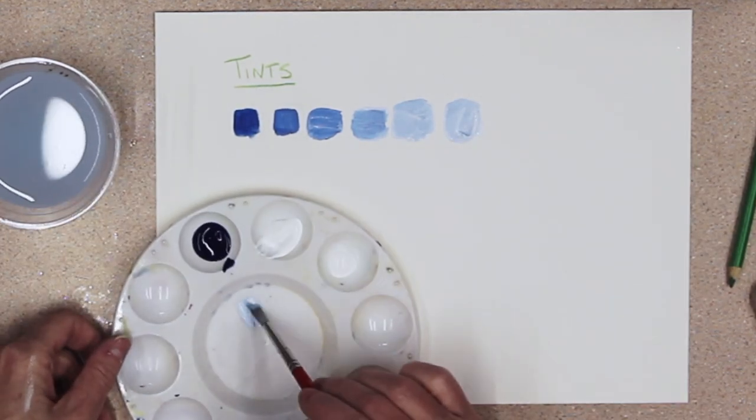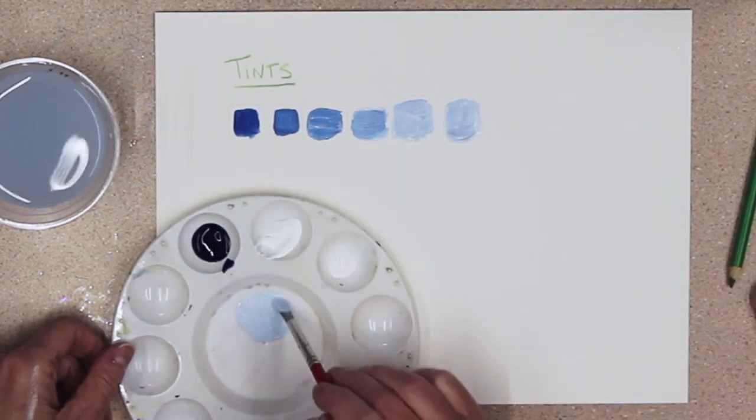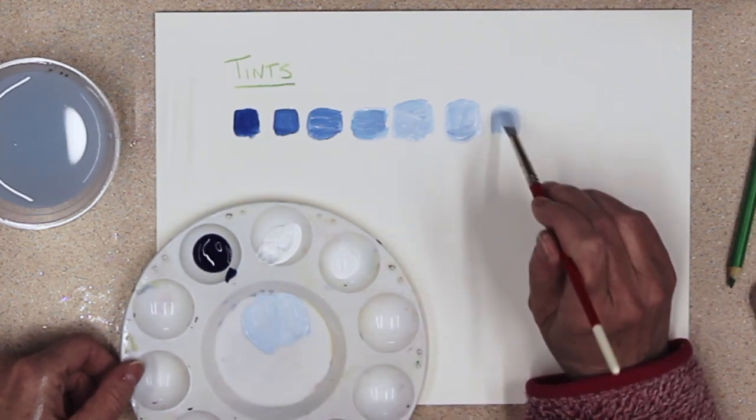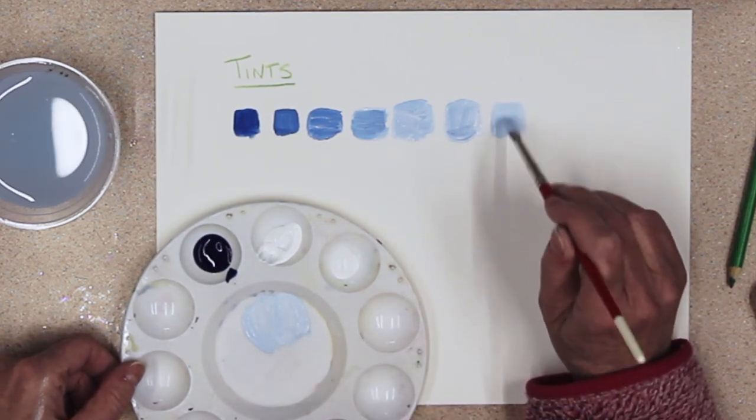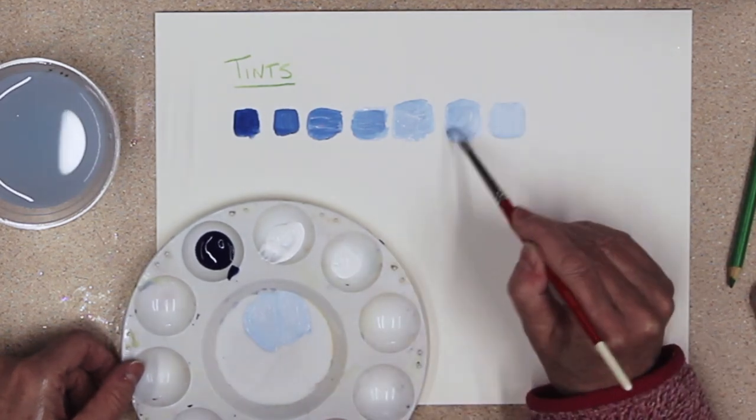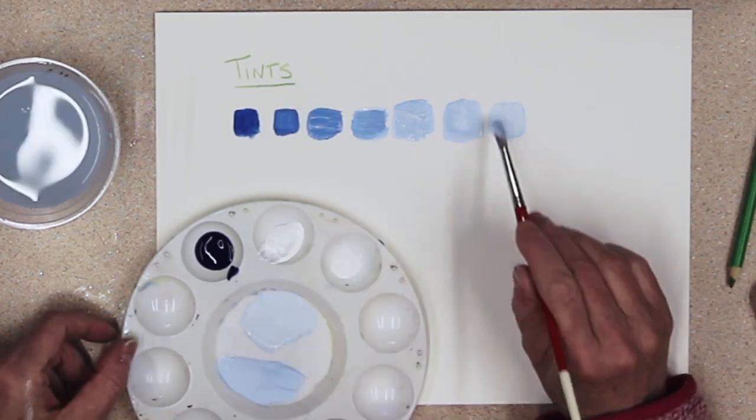So let's start using the palette instead, and that way I can gradually add a little bit of white and a little bit more white for each swatch and I'm not wasting any paint.